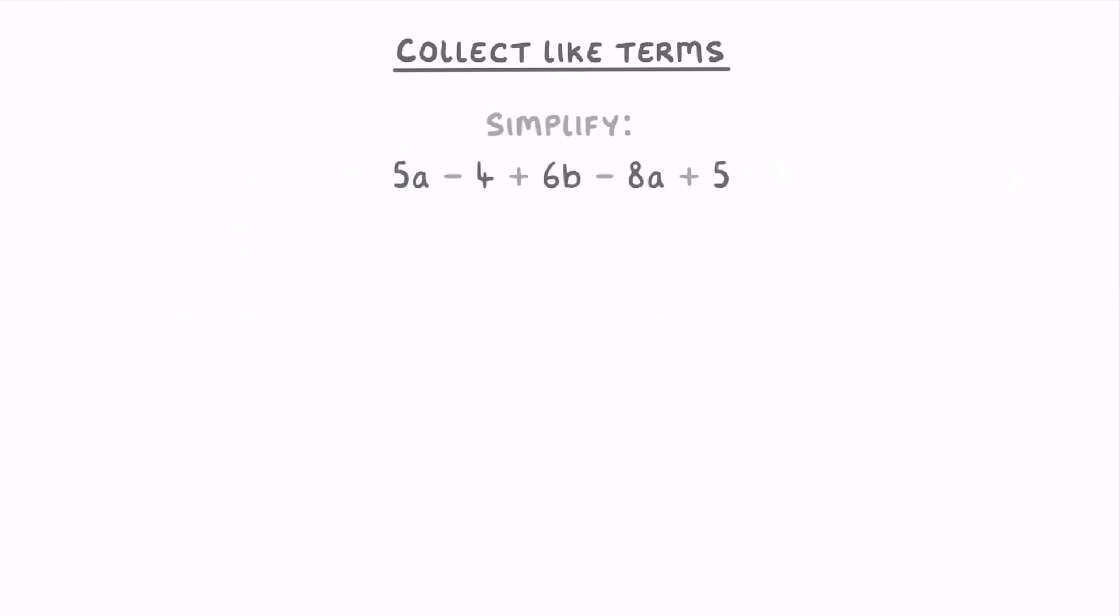So for this last question, we've got 2 a terms, 2 number terms, and a b term. So you can combine the a's by doing 5a minus 8a, which is minus 3a. Combine the numbers by doing minus 4 plus 5, so plus 1.